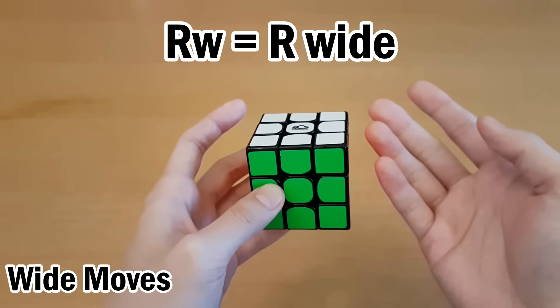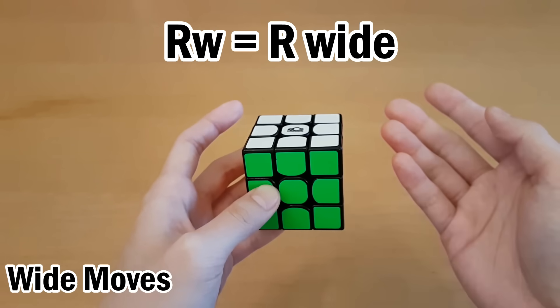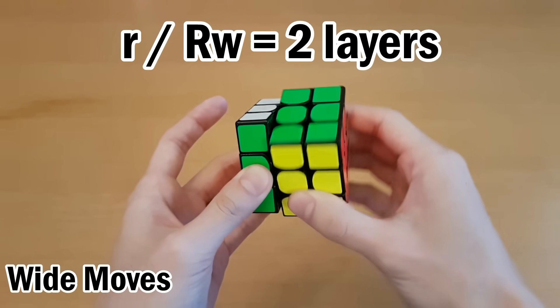or a capital letter followed by w read as Rw, this means to do two layers at once. So that would look like this.